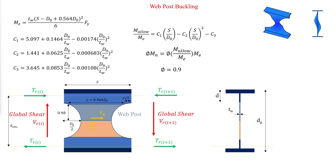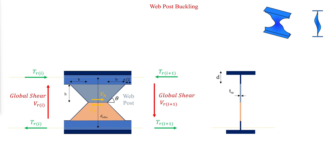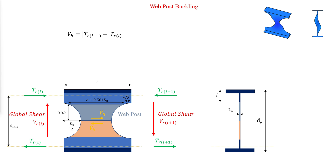These two equations are the result of detailed non-linear finite element studies and are only applicable for the following limits of S over D0 and DG over D0. For castellated beams, the horizontal shear is calculated by subtracting the difference in axial forces in two adjacent openings, and the moment in the posts is then calculated accordingly. In cellular beams, the moment is calculated similarly.